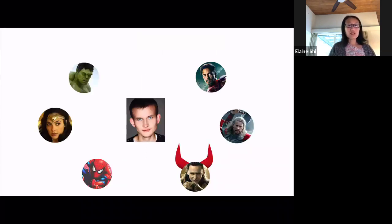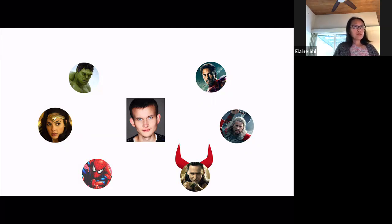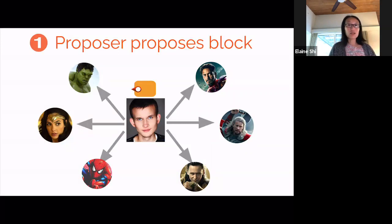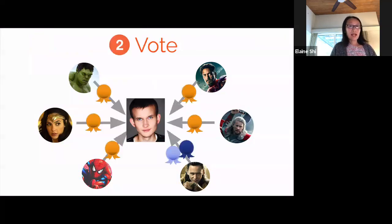Here is a very natural voting-based protocol. The guy in the middle, Vitalik, is the leader — also called the proposer — and the other folks are voters. Some people may be corrupt; in this case, Loki is corrupt. The leader may also be corrupt. We are going to use a voting-based approach to agree on every block — we agree on one block every epoch. Every epoch, the leader first makes a proposal by signing it. In this case, he proposed the orange block. Then everyone votes — a vote is a signature on the proposed block. If you are honest, you vote on the first proposal you hear from the leader.